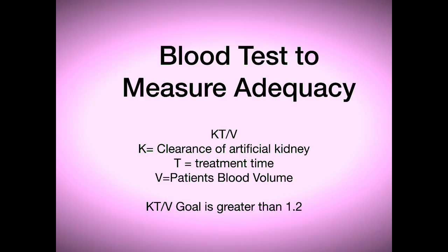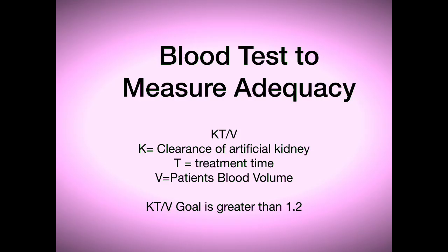The K in the equation is how well the kidney that we're using — the artificial kidney — clears away poisons from the patient's body. The T is how long the person runs on the machine in minutes. And the V in the equation is the blood volume the patient has. Someone who's larger is going to have a larger blood volume, and someone who's smaller is going to have a smaller blood volume.